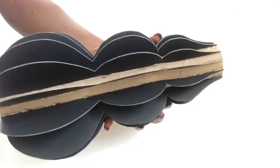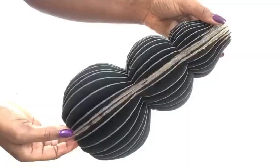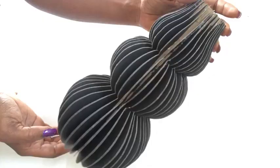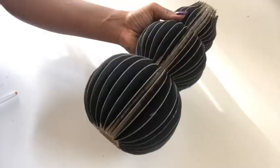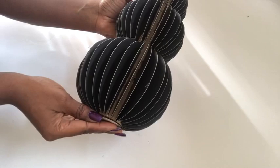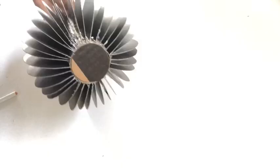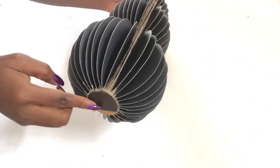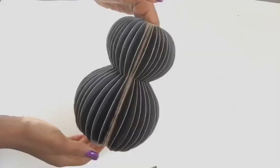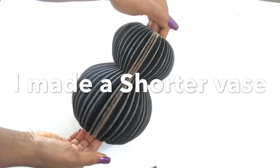I'm going to keep gluing on the pieces to the paper towel holder until it's full enough to my satisfaction. I'm okay with this and now I'm going to be covering up the bottom part. I used the measurement of the paper towel holder to carve out the circle and then I glued it at the bottom. I made a shorter vase